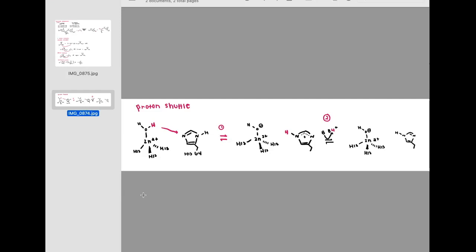As you can see in the diagram, histidine 64 is a residue in the active site which is able to grab a proton and can therefore shuttle it to the surface of the active site. So the buffer, shown with the letter B, is able to pick up that proton, and the protein transfer of the zinc-bound water is able to, with the buffer, increase the hydration rate of CO2, which will be explained later.